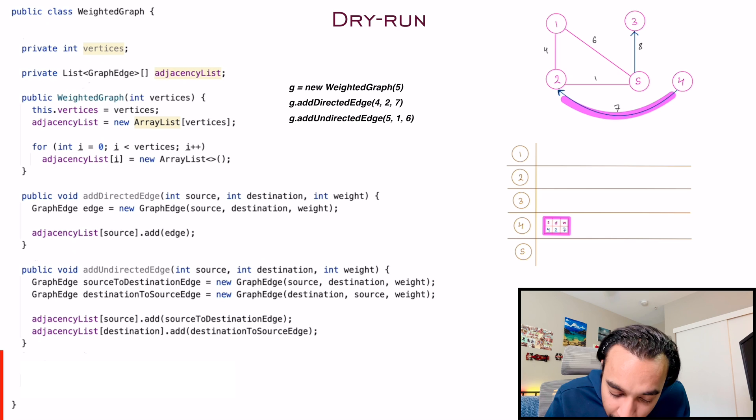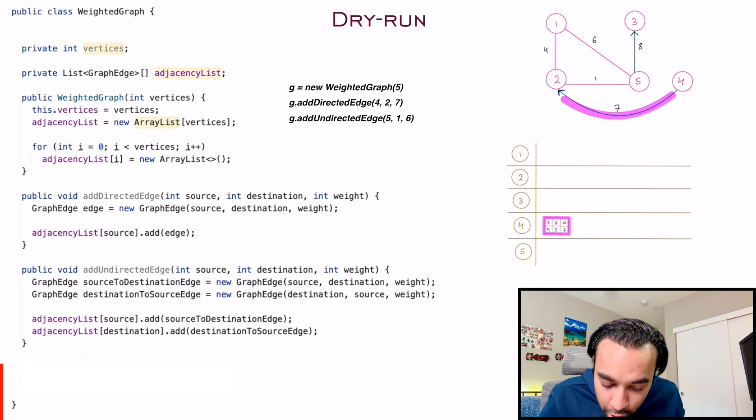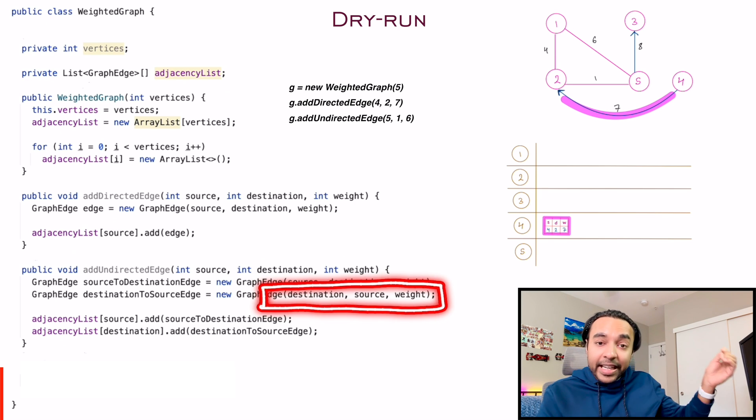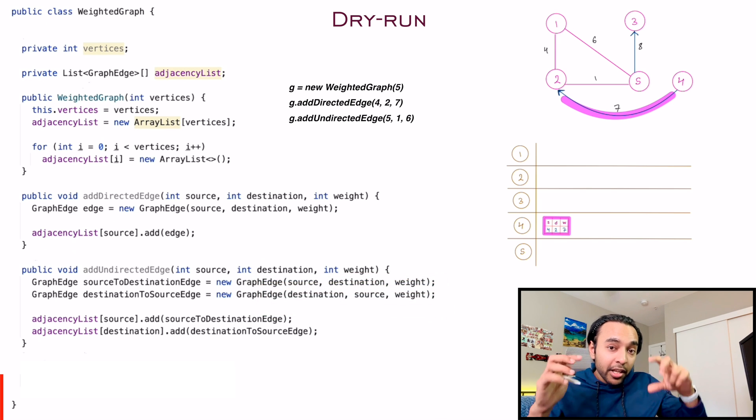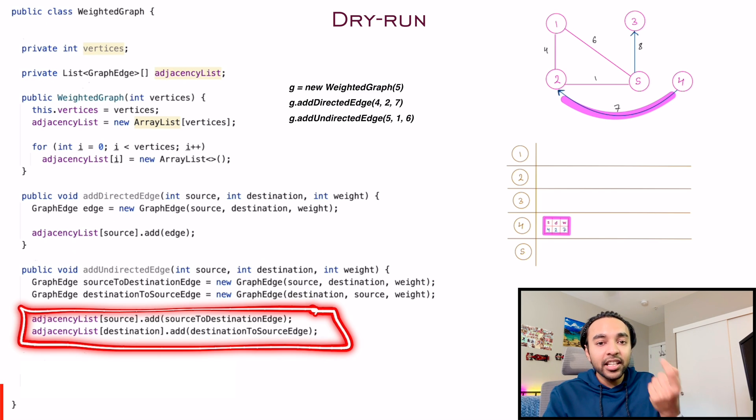One edge will be between the source and the destination with the weight. And then one edge in the reverse direction. So you will make one more edge between the destination and the source along with the same weight.